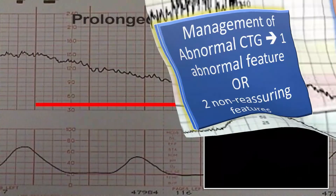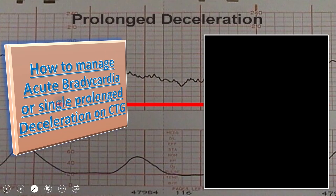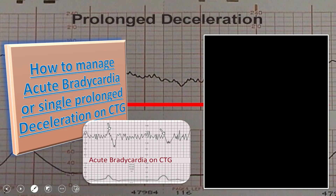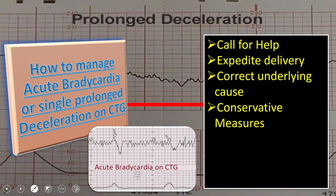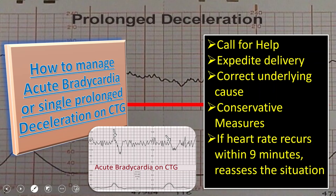For acute bradycardia or a single prolonged deceleration on CTG: first, call for help and urgently seek obstetric assistance. Expedite delivery if there has been an acute event such as cord prolapse, suspected placental abruption, or suspected uterine rupture. Correct any underlying cause like hypertension or uterine hyperstimulation and start conservative management. Expedite birth if acute bradycardia persists for nine minutes. If the heart rate recovers at any time up to nine minutes, reassess the whole situation and plan accordingly after discussion with the woman.